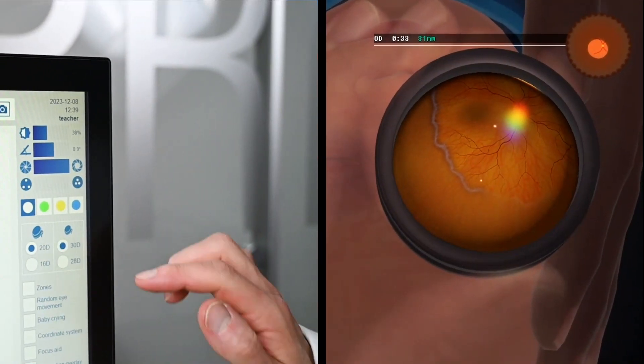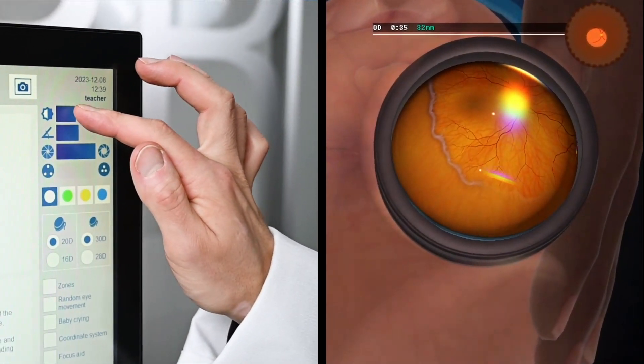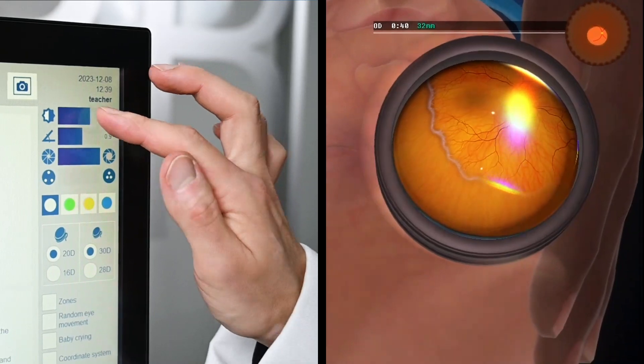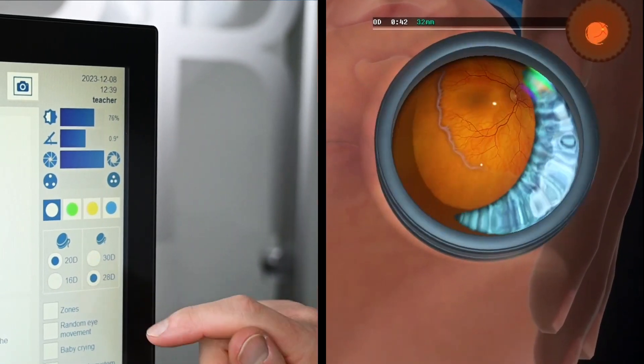On the touch screen, trainees can control the indirect ophthalmoscope settings. For example, light intensity and lens magnification.